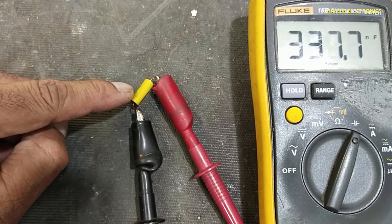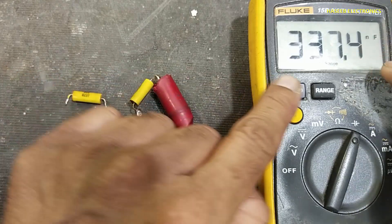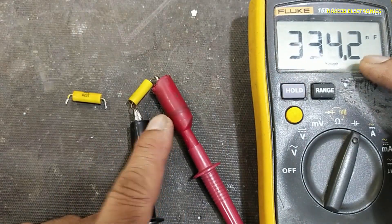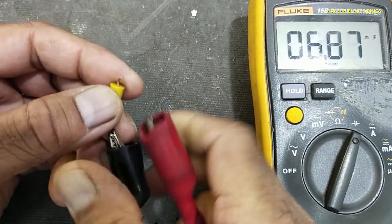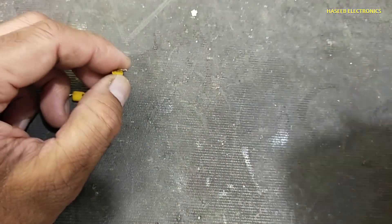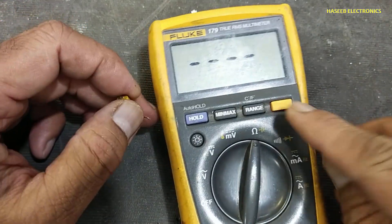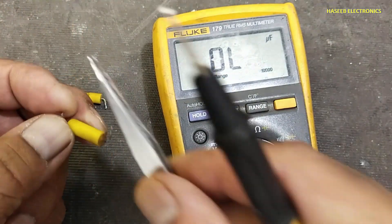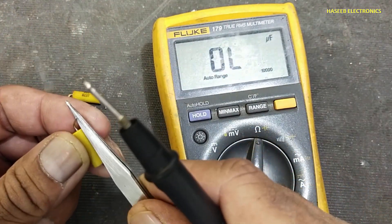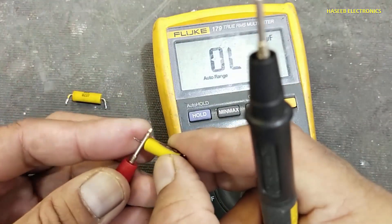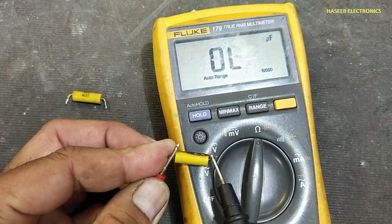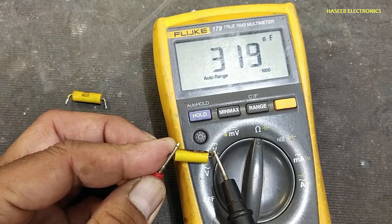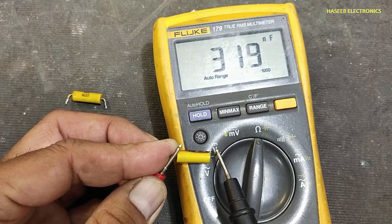The same value, 1 microfarad capacitor, 10%. It is giving this reading, so it is out of limit. This capacitor cannot be used. If I check with the second multimeter, the same: 319 nanofarad. So this capacitor is not good.